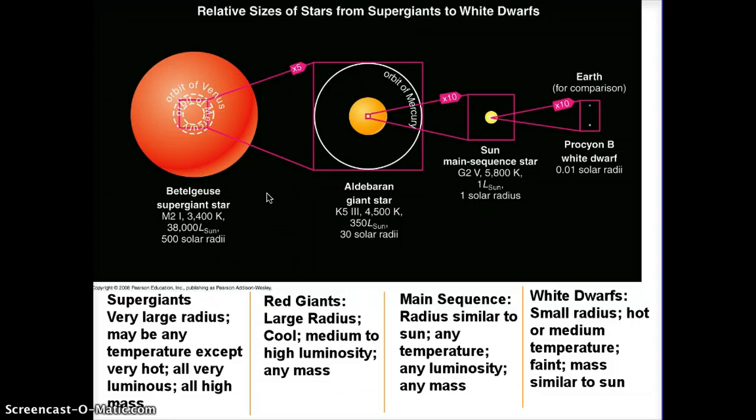If you stuck Betelgeuse down where the sun is, this dotted white line represents the orbit of Venus, and this represents the orbit of Mercury. Earth would be kind of here, and Mars would be kind of here. Basically, Betelgeuse would go out to the orbit of Jupiter. So all of the planets in the interior of the solar system - Mercury, Venus, Earth, Mars - would be inside Betelgeuse if we stuck it down where the sun is.